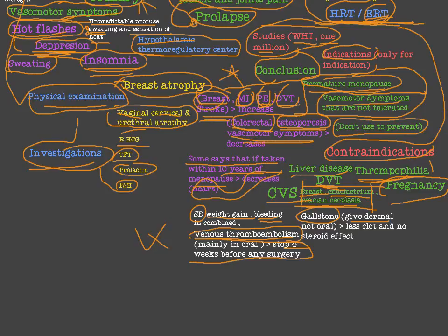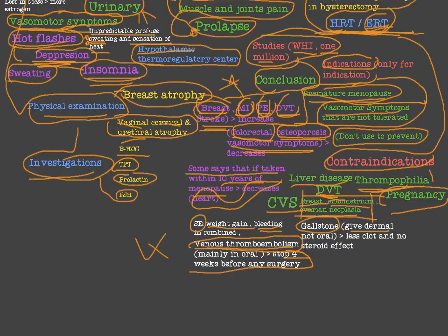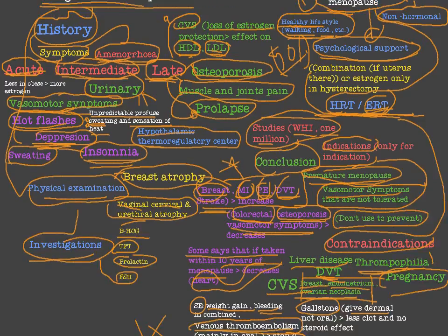For non-hormonal treatment of menopause: for depression, give selective serotonin reuptake inhibitors (SSRIs) such as Paxil. For vaginal atrophy, low-dose vaginal estrogen can be given — it is not absorbed systemically, so there is no need to oppose it with progesterone. For osteoporosis, modify lifestyle with weight-bearing exercise, decrease smoking and alcohol, and give calcium and vitamin D. Bisphosphonates are the first-line treatment for osteoporosis.